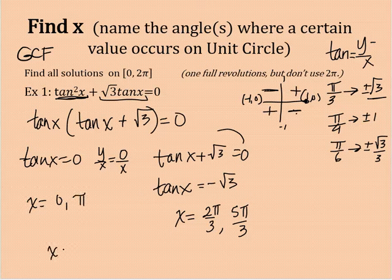So this problem, all together, has four solutions: 0, 2π/3, if you put them in order, π, and 5π/3.